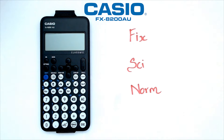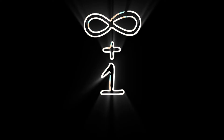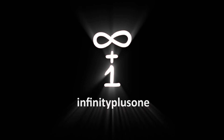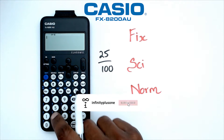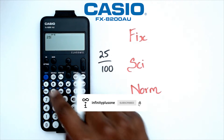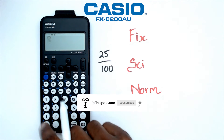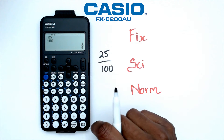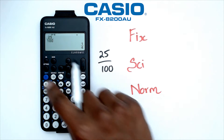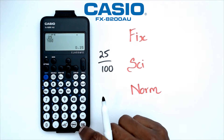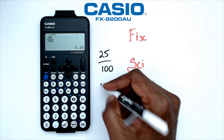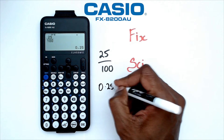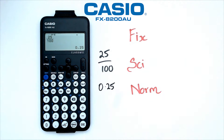So without further ado, let's get started. Let's take the number 25 over 100 and put that into a quick fraction. We've got one quarter. Now if we go shift EXE, we're going to get 0.25 as the decimal.